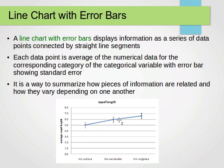We link the averages up using straight line segments, and the bars indicate the error — how much the remaining values differ from the actual average. Each data point is the average of the numerical data for the corresponding category, with the error bar showing the standard error of values with respect to the average. It's a way to summarize how pieces of information are related and how they vary depending on one another. So the x-axis shows the classes and the y-axis shows the average sepal length.